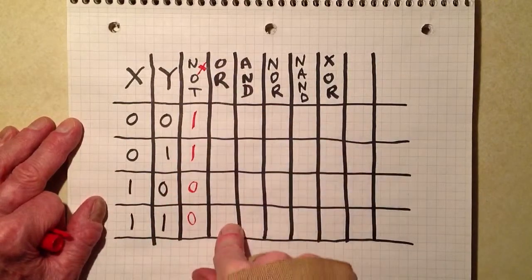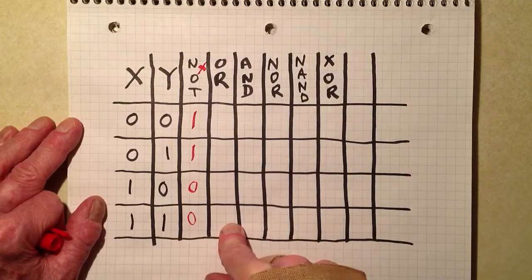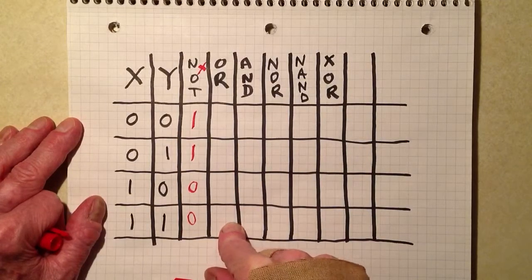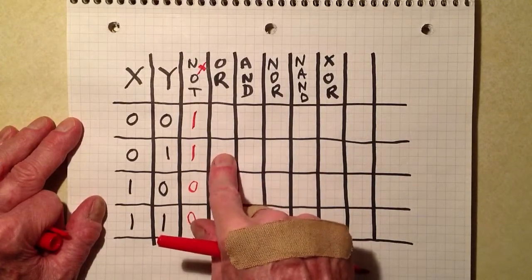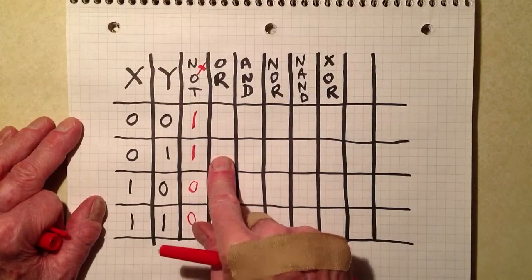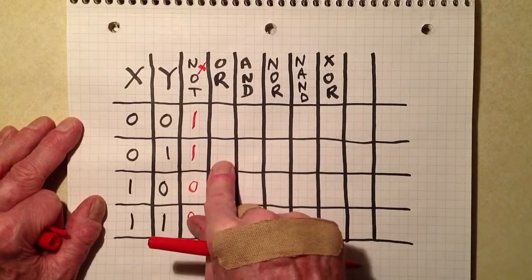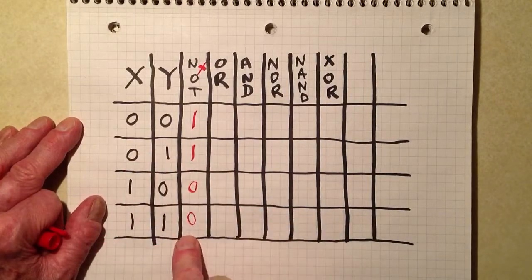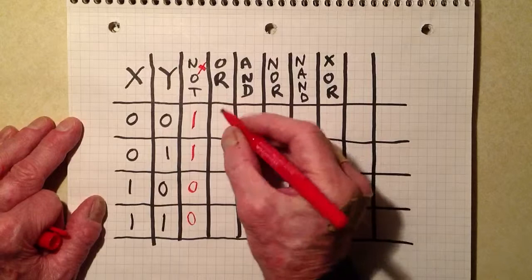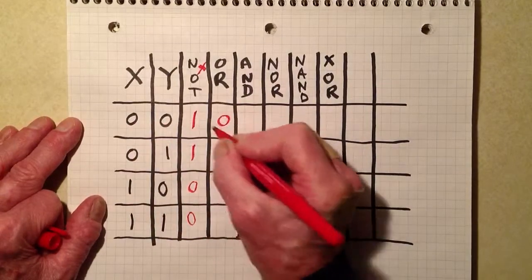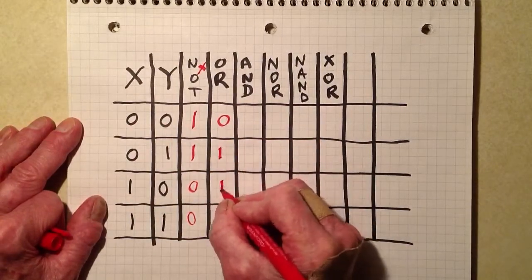Now as for the OR, that is what is known as an inclusive OR, meaning that if at least one of the inputs is at the high state, that is logic 1, then the output is a logic 1. If at least one of them is. If they both are, then it's also 1. If they're both low, we get low. So it looks like that.